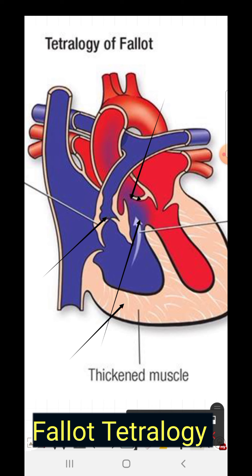Regarding the VSD, there is a large ventricular septal defect in this condition, and so pressure is equal in both ventricles — therefore there is no murmur from the VSD. This increased pressure in the right ventricle may also contribute to right ventricular hypertrophy.